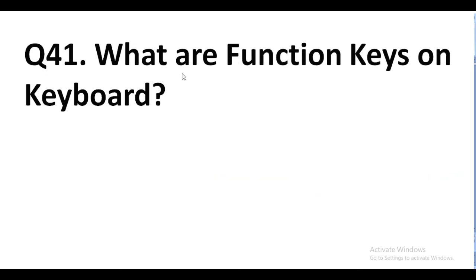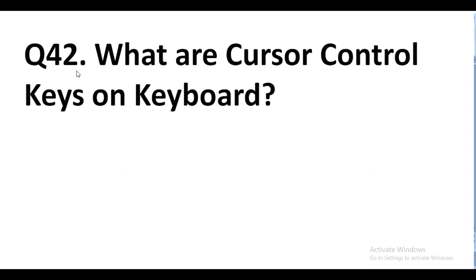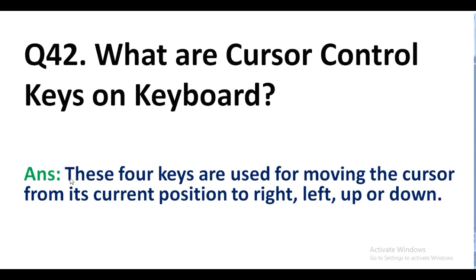Question number 41. What are function keys on a keyboard? Answer. The keys consisting of F1 to F12 are called function keys, and these keys provide shortcuts for doing routine tasks on a computer. Question number 42. What are cursor control keys on a keyboard? Answer. These four keys are used for moving the cursor from its current position to right, left, up, or down.